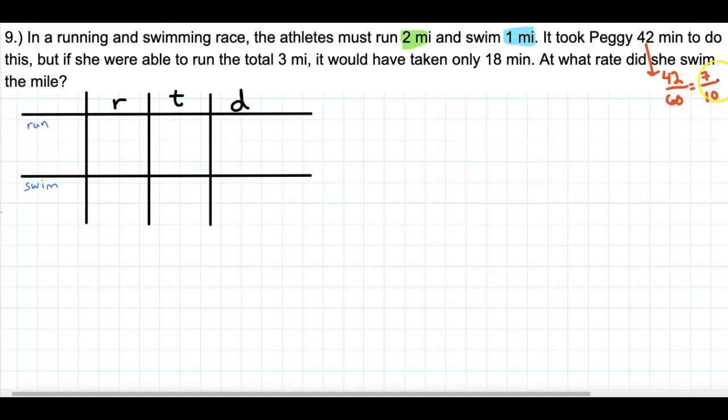So we'll leave that in hours, right? Because this is hours. And 18 minutes, so 18 out of 60, that is equal to 6, so 3 tenths of an hour. Okay. So those are our two different times that we are given.